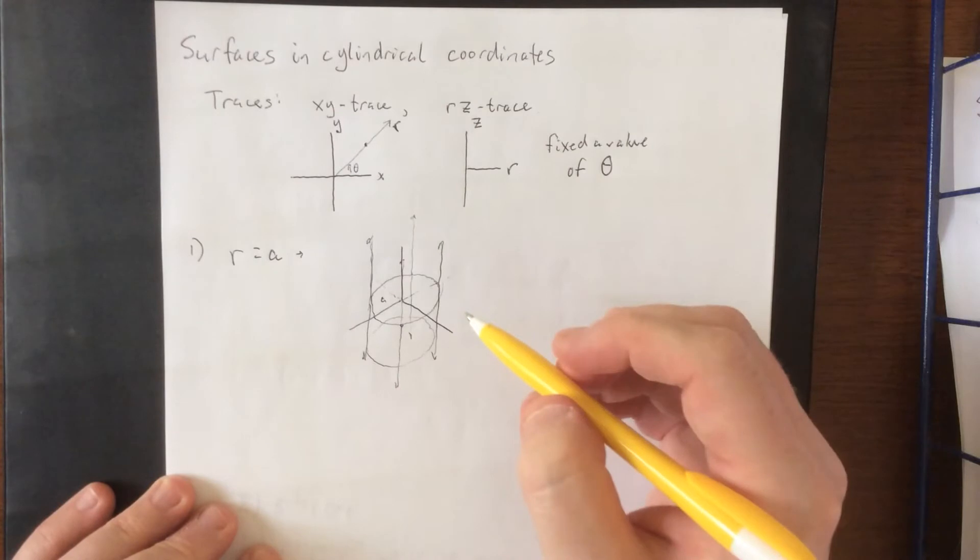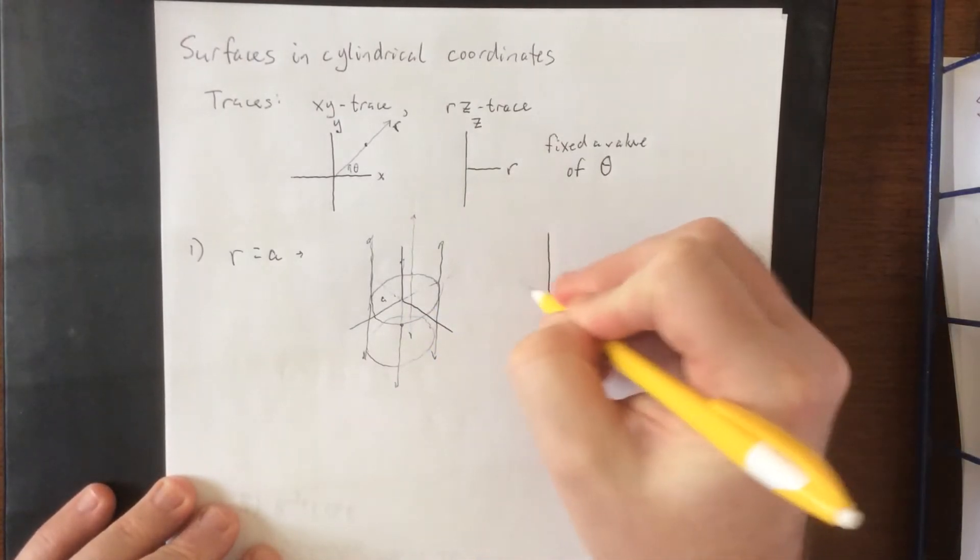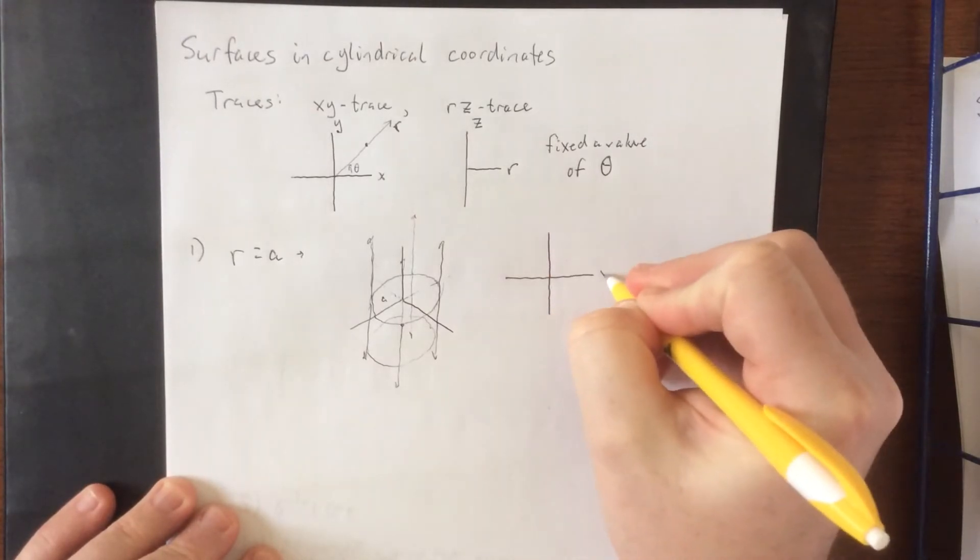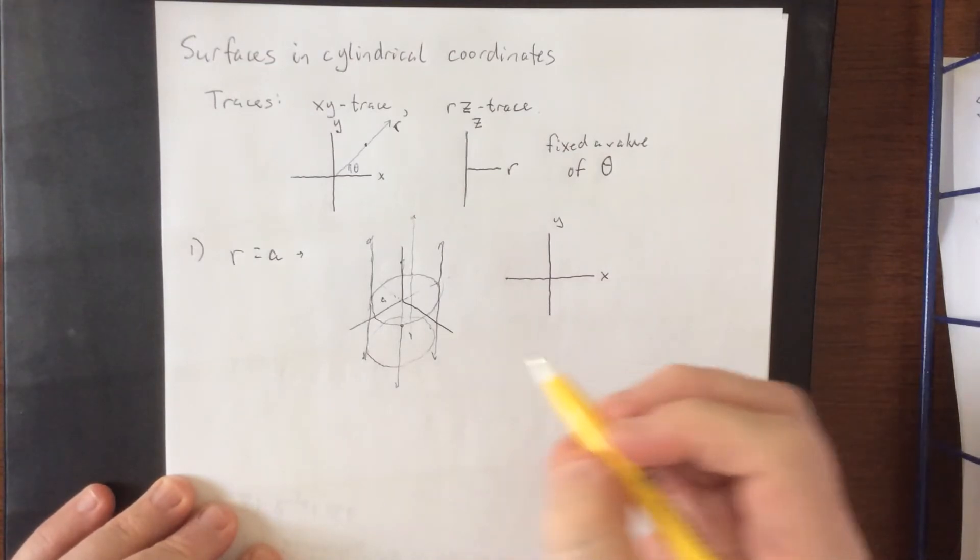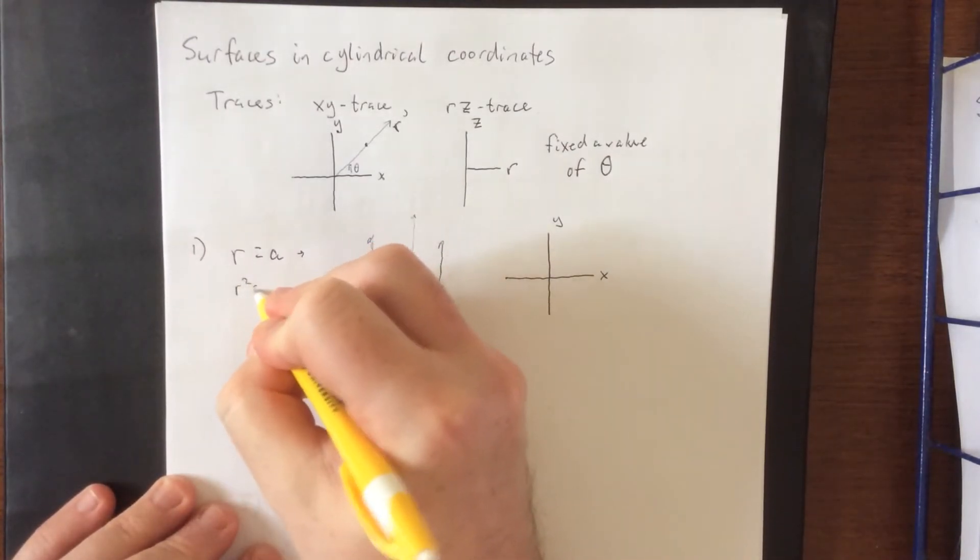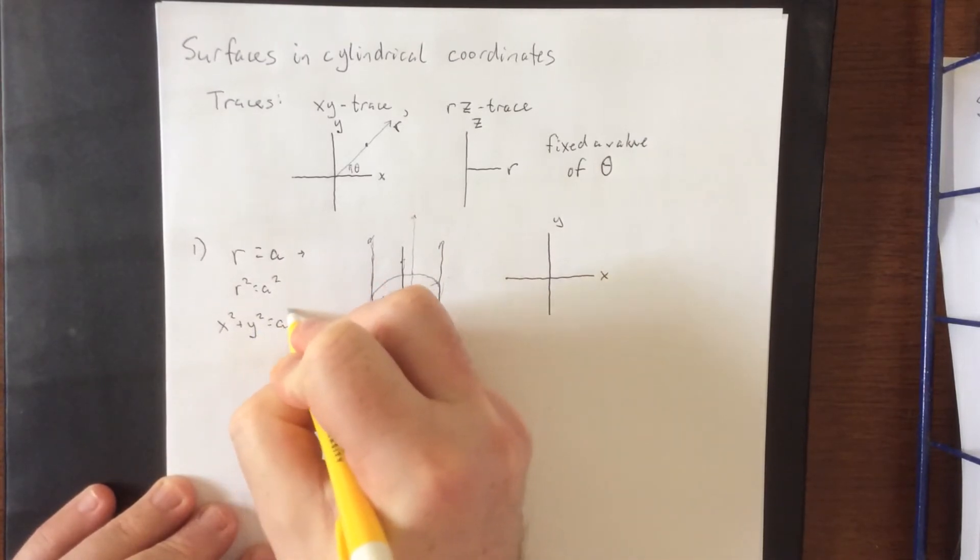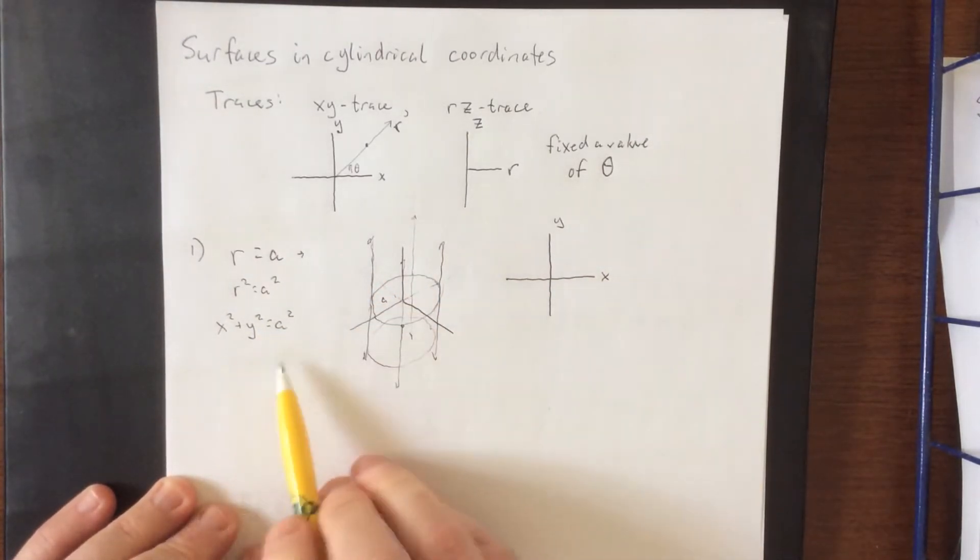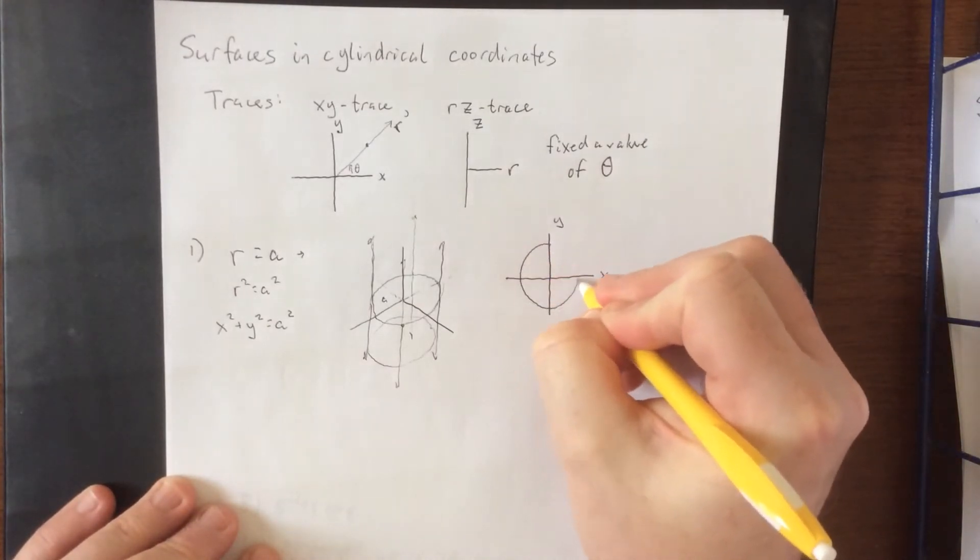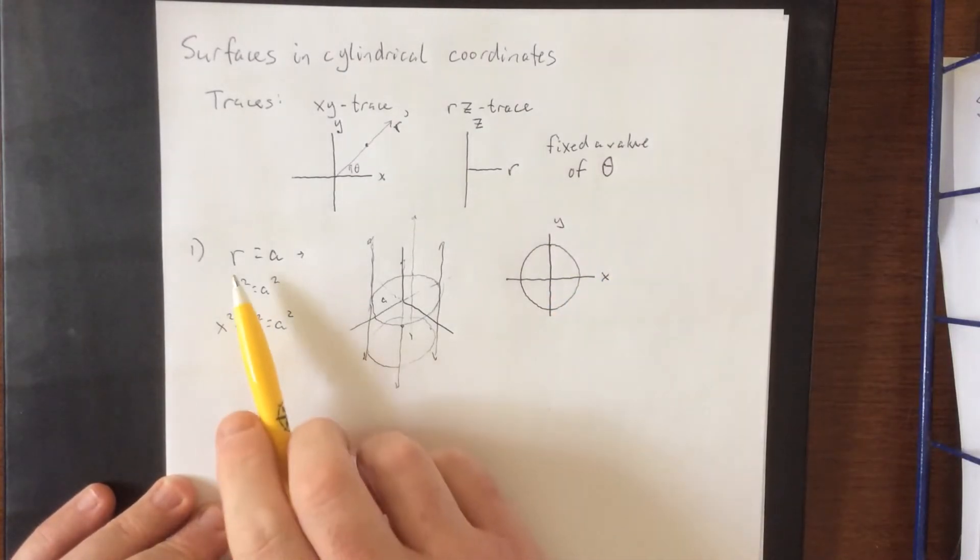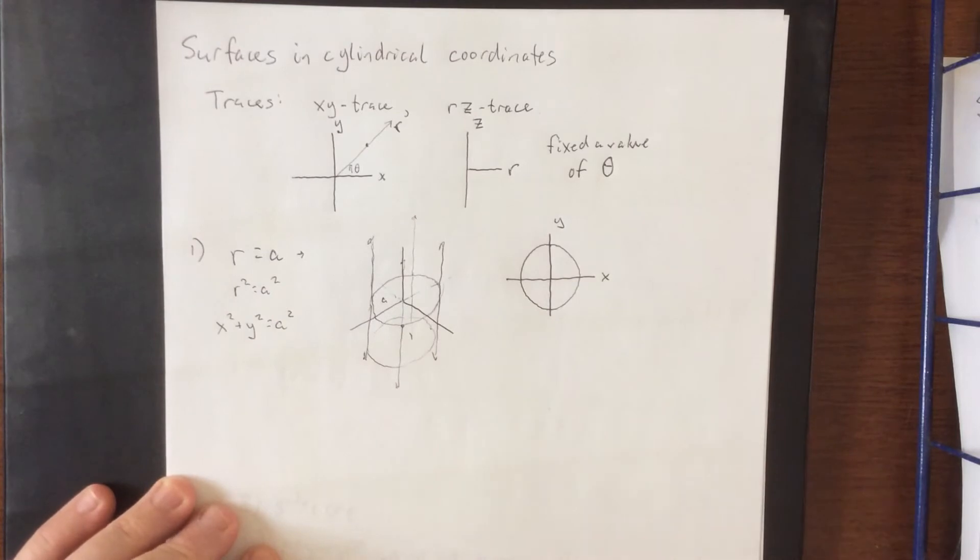Now, as you can tell, I'm pretty terrible at drawing this in three dimensions, so what I'm going to do is let you know what the xy trace looks like. So in terms of the xy trace, we would be treating this the same way that we would be treating R squared as equal to A squared or converting back from polar coordinates into rectangular coordinates. This would be x squared plus y squared is equal to A squared. We know that to be a circle of radius A. We can also interpret it that way based on the fact that the displacement from the pole is supposed to be A units.